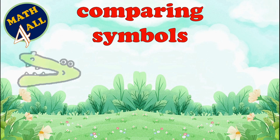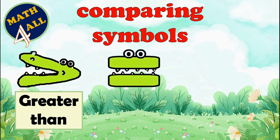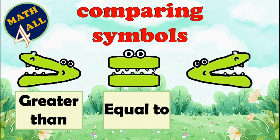Number Gator realizes the difference between the comparing symbols. When he opens his mouth toward the left side, we call this symbol 'greater than.' The next symbol, when the two values are equal, we call it 'equal to.'